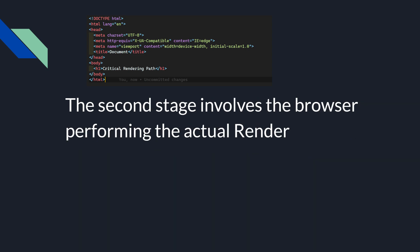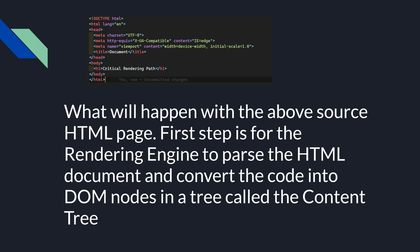The second stage involves the browser performing the actual render. For the above source HTML page, the first step is for the render engine to parse the HTML document. It will parse the HTML and convert the code into DOM nodes in a tree called the render tree.